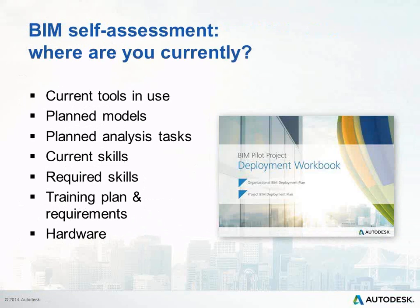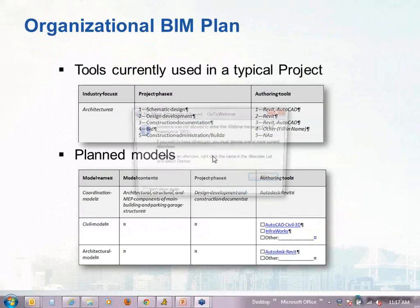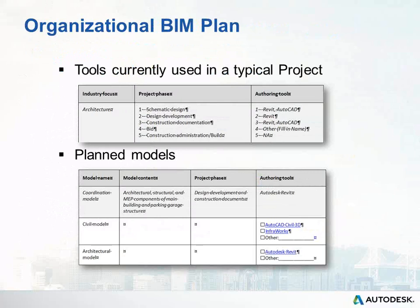There are a series of forms in the organizational section of the workbook to assist you in gathering information on your current workflow and processes. The current authoring tools section is where you fill in what your current authoring tools are — your industry focus, what tools you're using in different phases, and your current workflow. Planning tools help you outline the models your organization creates in a typical project and what models, if any, you are currently using. Each form has examples to give you guidance as you fill these out.